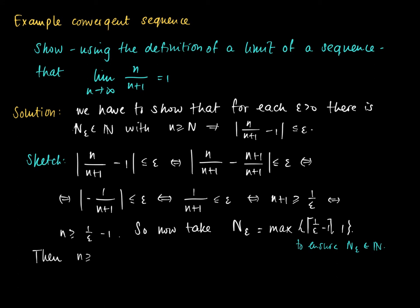Then for any n at least equal to capital N epsilon is equivalent with n at least the value of maximum of the ceiling of 1 over epsilon minus 1 and 1. And if we take such n, then of course we have epsilon is larger or equal than 1 over n plus 1.